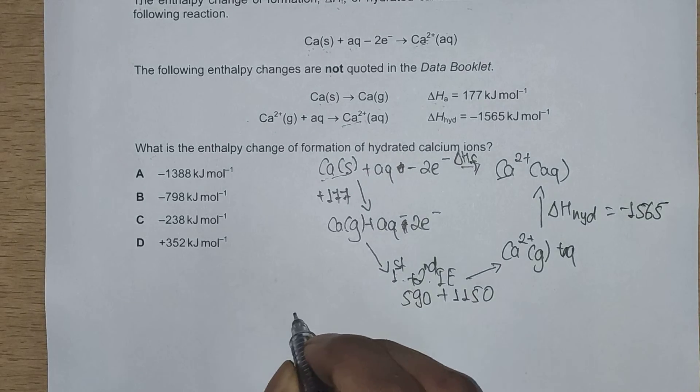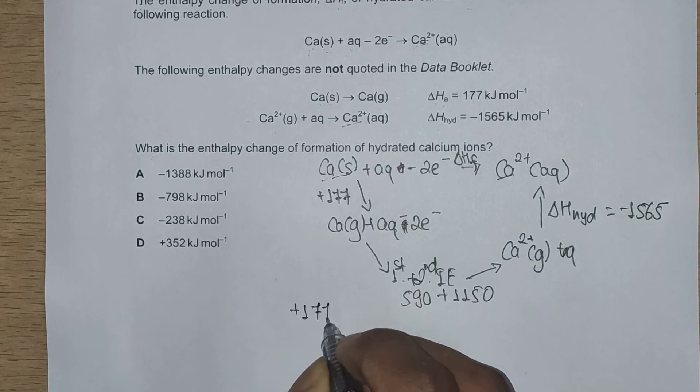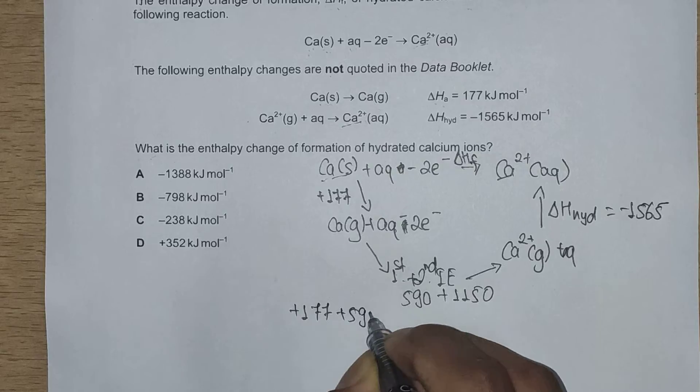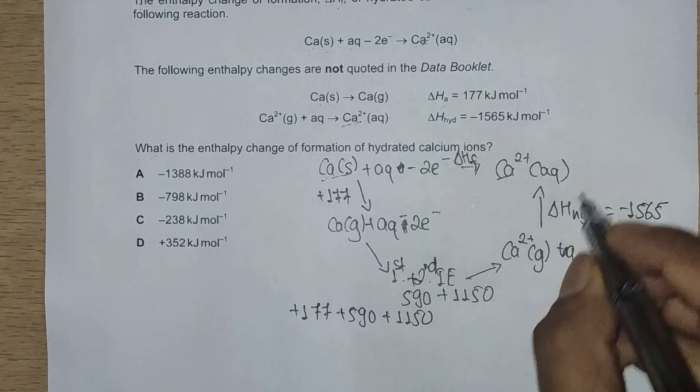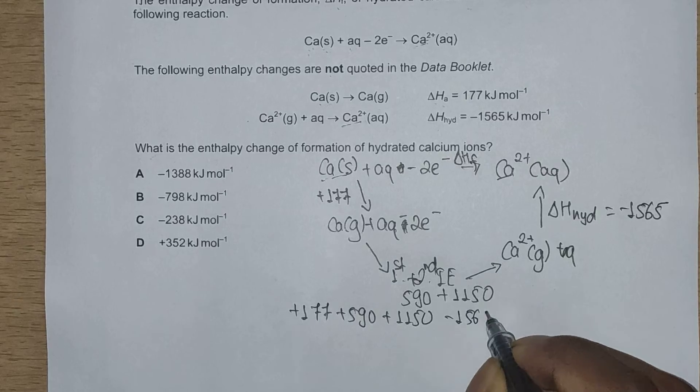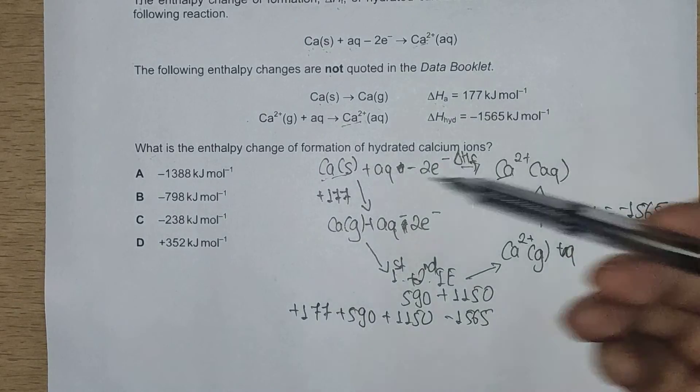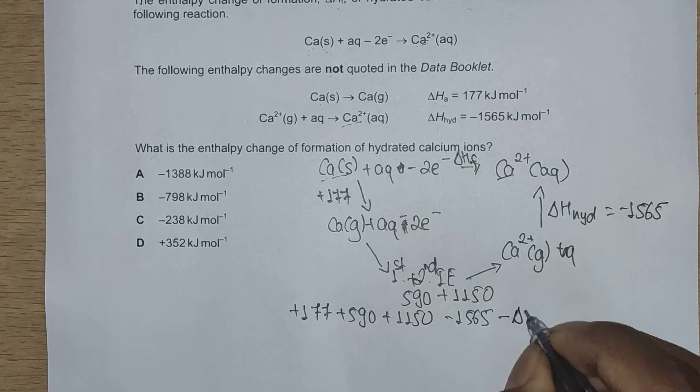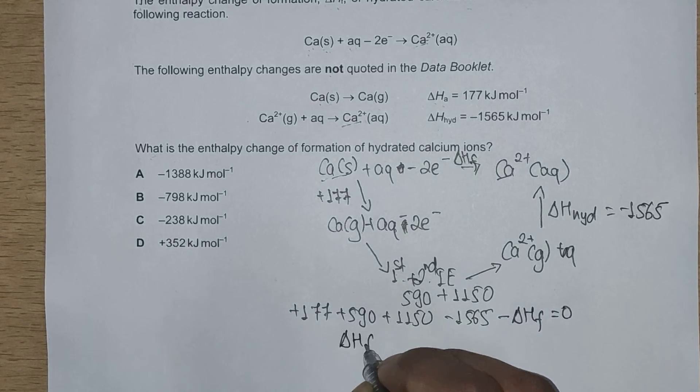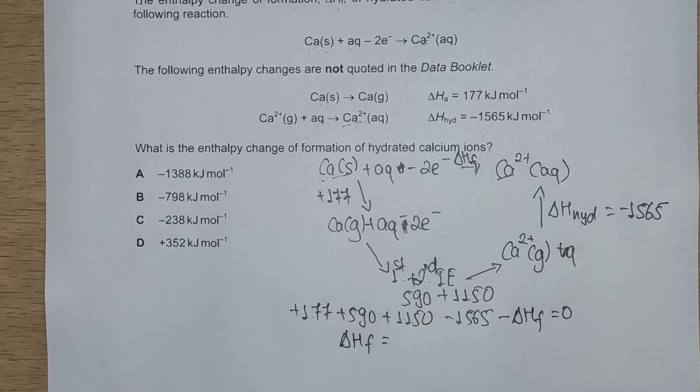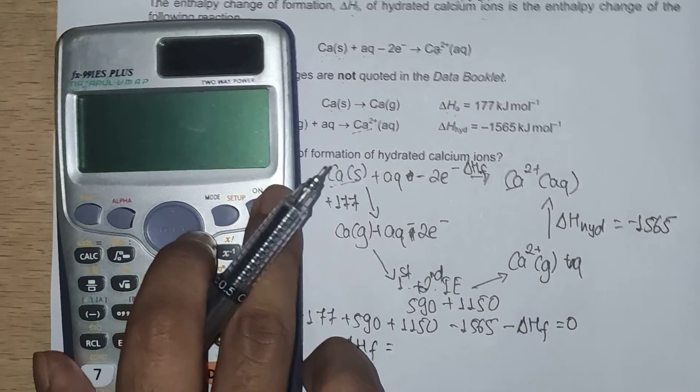going to this side. So the values we have are plus 177 plus 590 plus 1150 minus 1565. Now we'll go against the arrow, so minus delta H_f equals zero. So delta H_f should be, calculating all of these values, we'll have